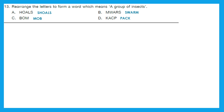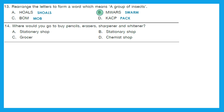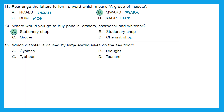The right answer is option B — swarm. Swarm is a group of insects. Question 14: Where would you go to buy pencils, erasers, sharpener, and whitener? These are all stationery items and we go to a stationery shop — that option is the right answer. Question 15: Which disaster is caused by large earthquakes on the sea floor? The right answer is option D — tsunami.